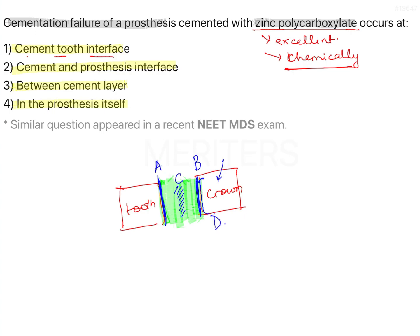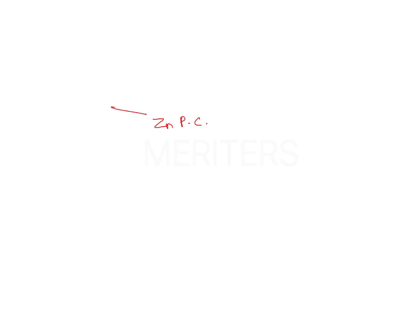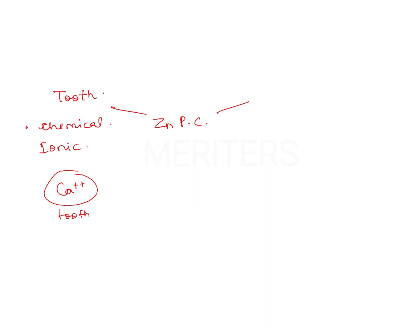Where does zinc polycarboxylate not really bond well? Like I told you, it bonds chemically to the tooth. Zinc polycarboxylate bonds to the tooth in an ionic bond. What happens is the calcium in the tooth forms a complex compound or a chelate — there is a chelation reaction with the carboxyl groups. Polycarboxylate forms a chelate with calcium.